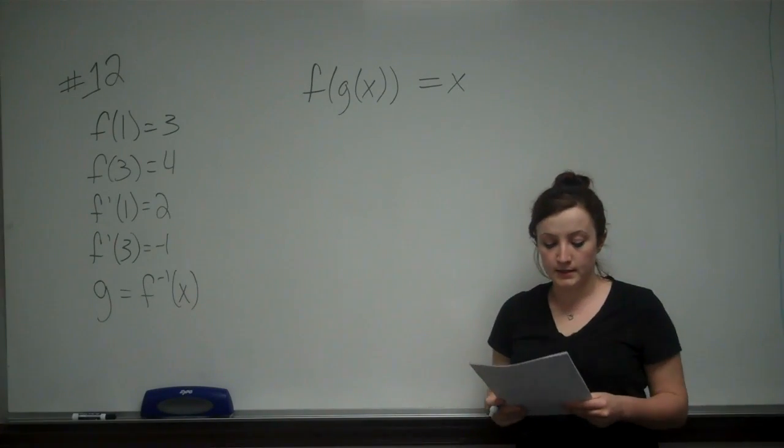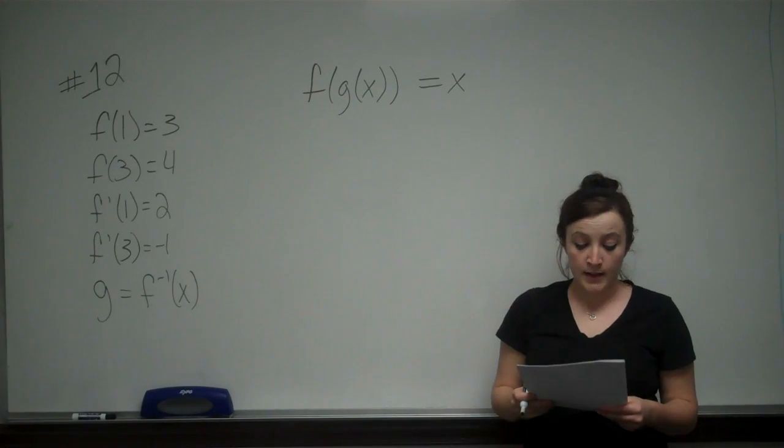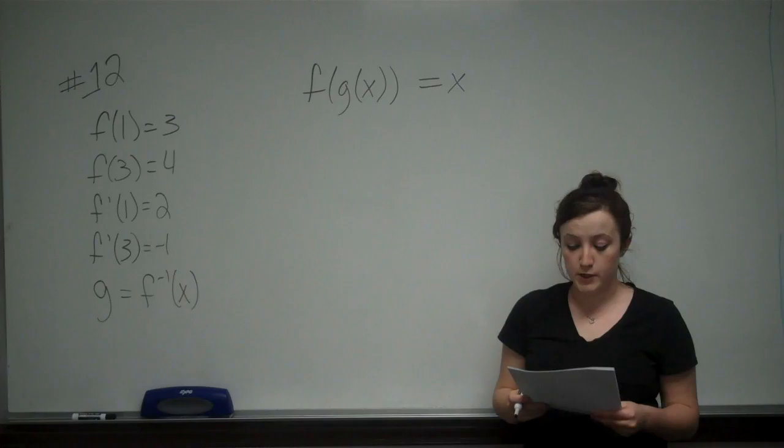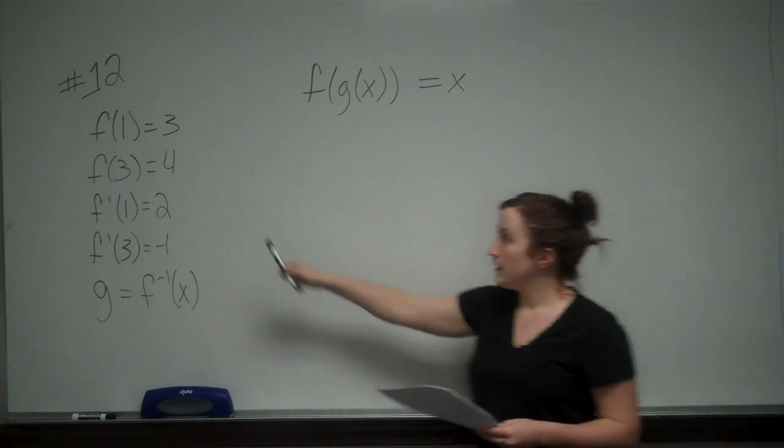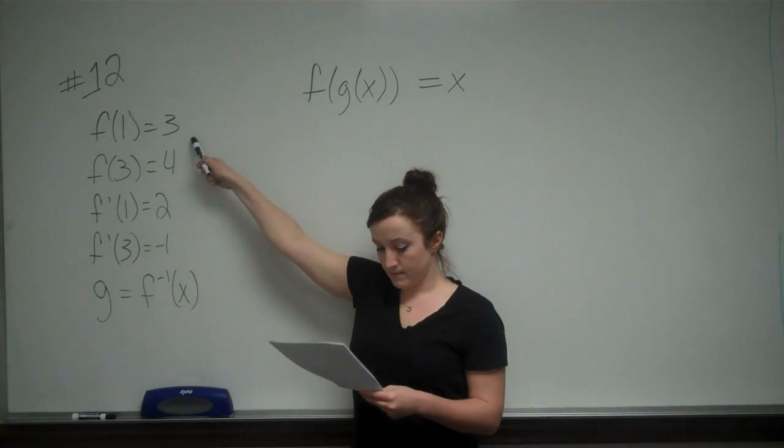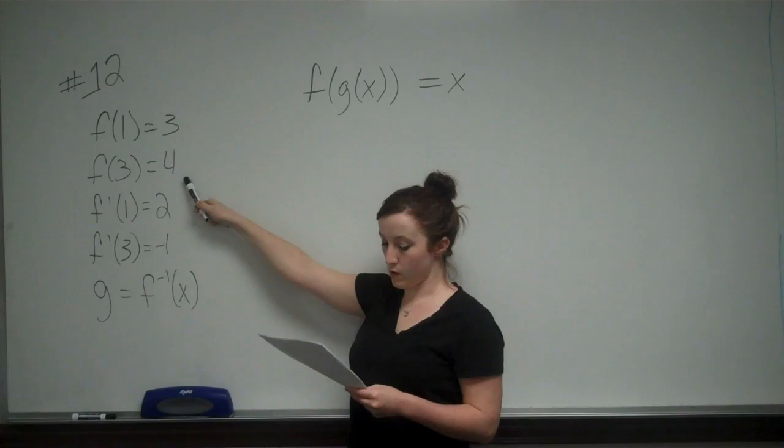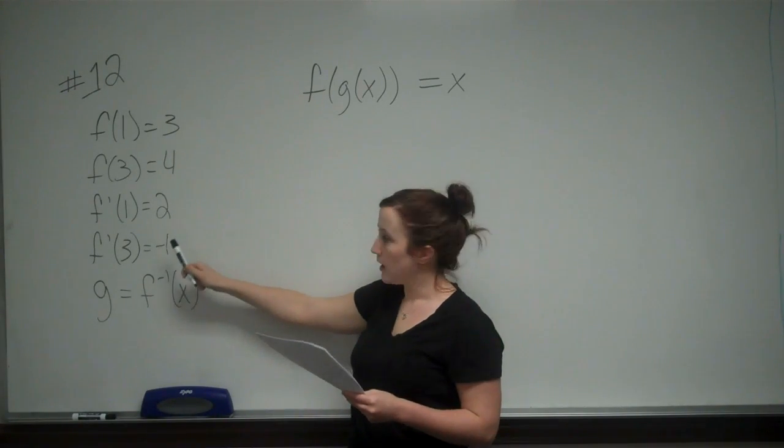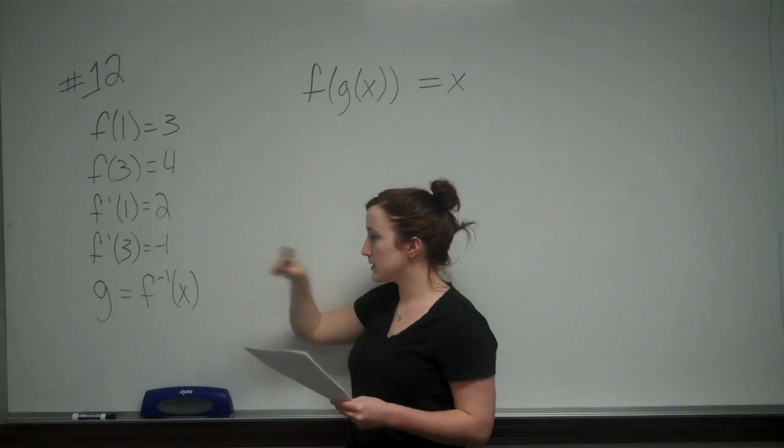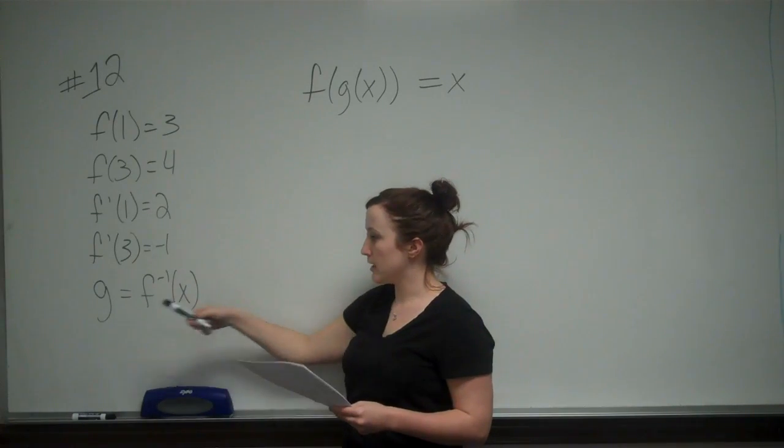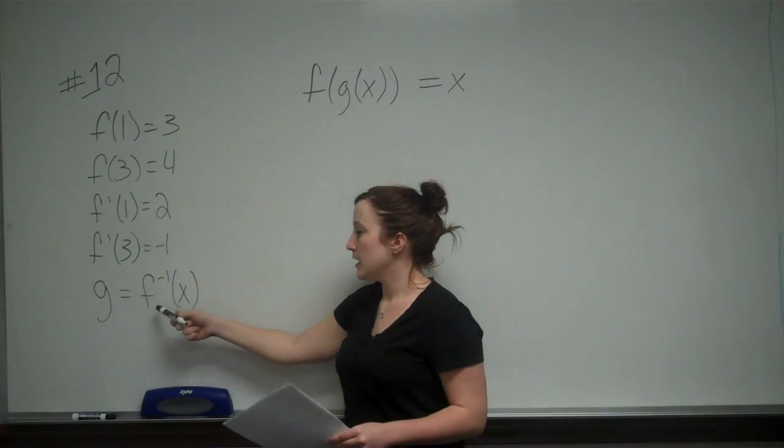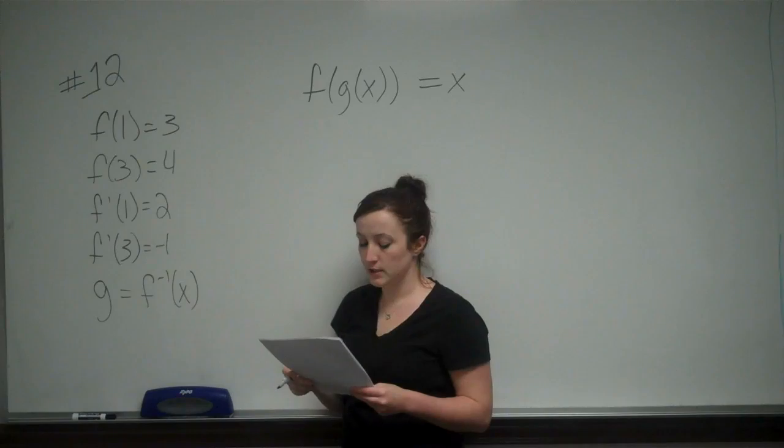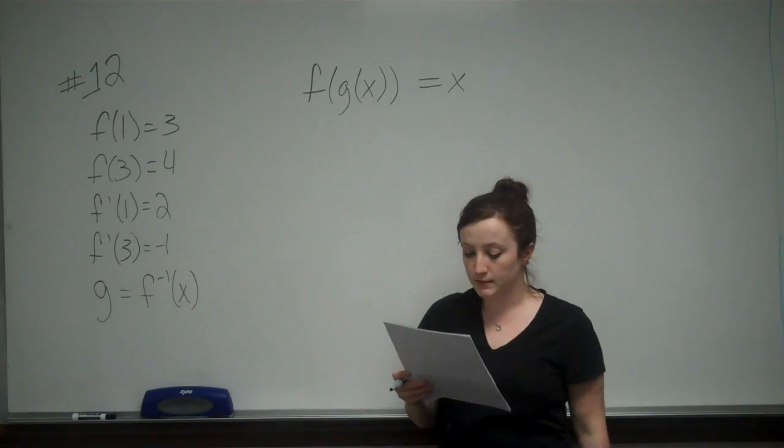Number 12, and it says that let f of x be a one-to-one differentiable function so that f of 1 equals 3, f of 3 equals 4, f prime of 1 equals 2, f prime of 3 equals negative 1, and such that g of x is equal to the inverse of f of x.